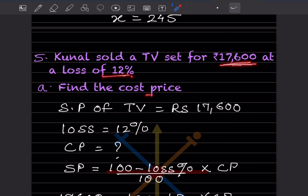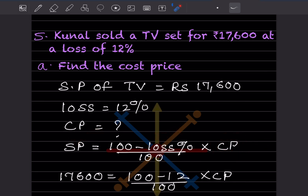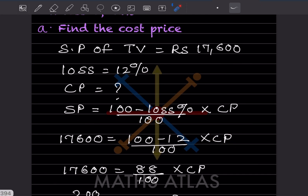Kunal sold a TV set for rupees 17,600 at a loss of 12%. Find the cost price. Selling price is 17,600 and loss percentage is 12%. We use the formula: selling price equals 100 minus loss percentage, divided by 100, times cost price. Since we know the selling price and loss percentage, only cost price is unknown. Substituting: 17,600 equals 88 over 100 times CP.